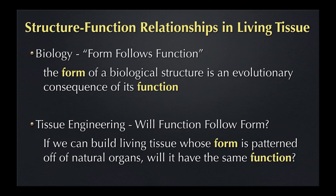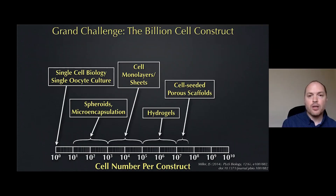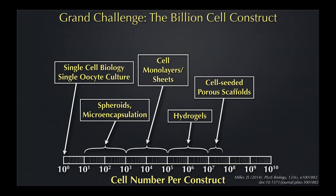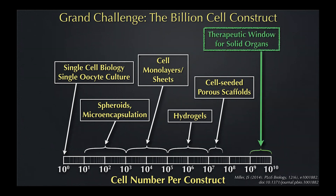One challenge we think about a lot is how we're going to get enough cells. Looking at an exponential graph of cell number per construct, a lot of our lab's work is here, but we really need to be thinking at organ scale — we have hundreds of billions of cells in our organs. We need at least one to ten billion cells in organ scaffolds to replicate that biochemical function in a portable volume that fits inside our body. If I make an organ that is 10% as efficient as the liver, it has to be ten times bigger, and that won't fit inside your torso.